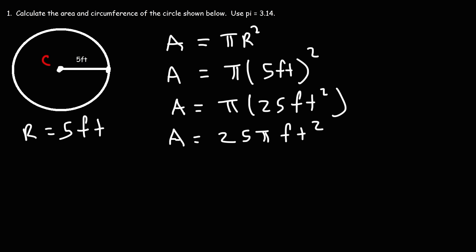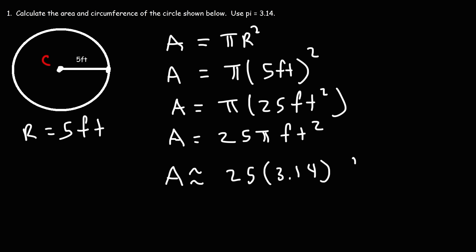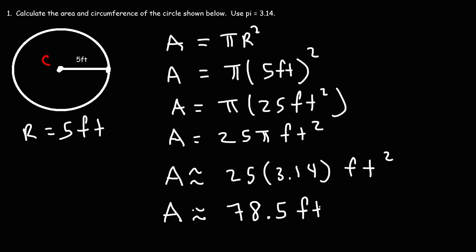But we're going to get an approximation by replacing pi with 3.14. The area is approximately 78.5 square feet. That's how you calculate the area of a circle if you're given the radius.